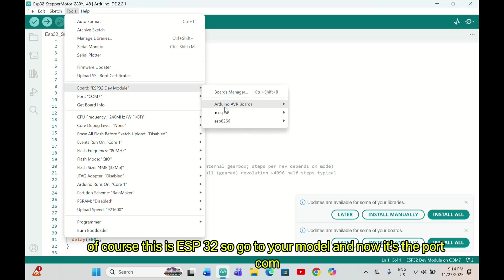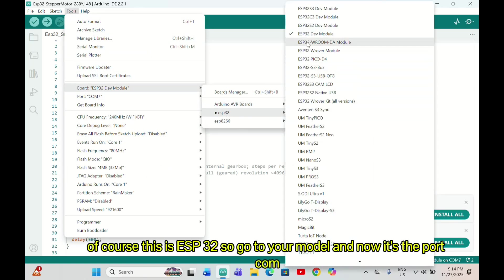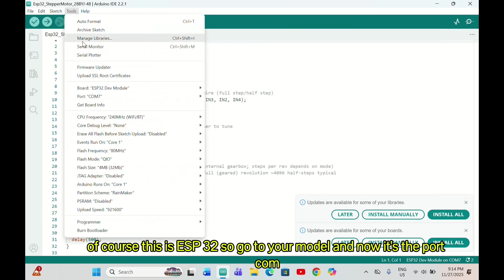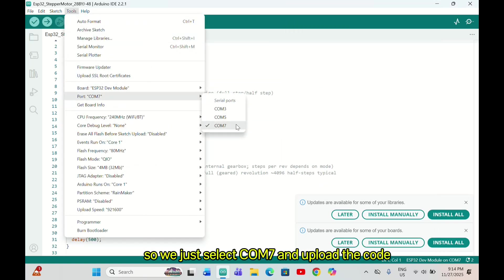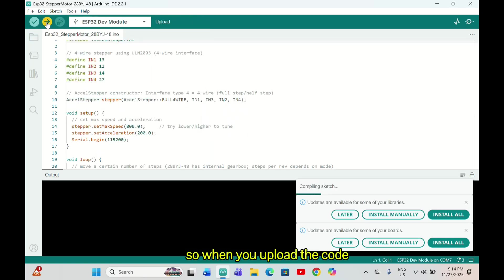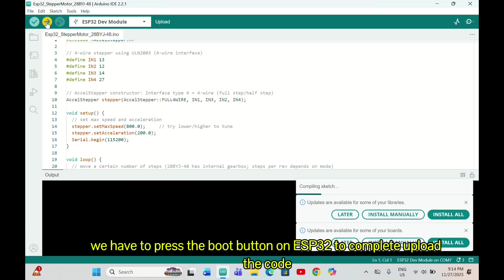Then we will select the board. Of course this is ESP32, so go to your model and now it's the COM port, so we just select COM 7 and upload the code. When you upload the code we have to press the boot button on ESP32 to complete the upload.